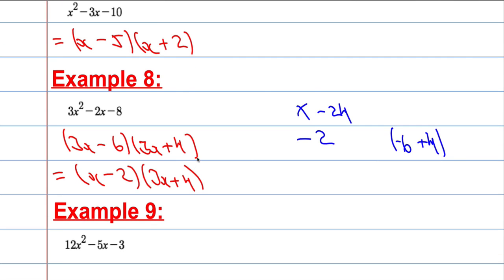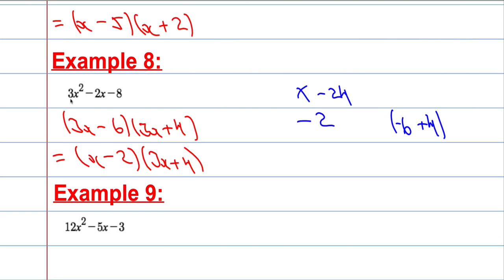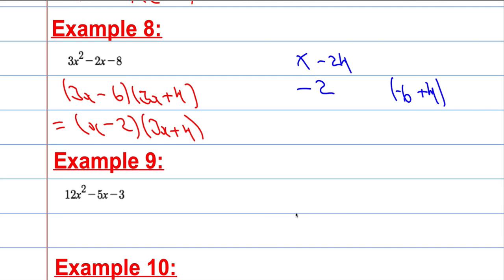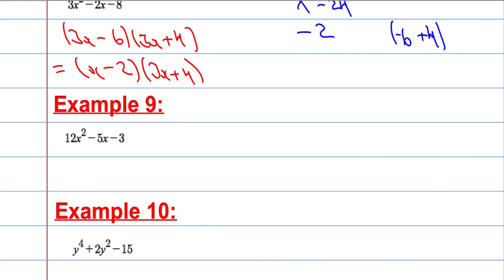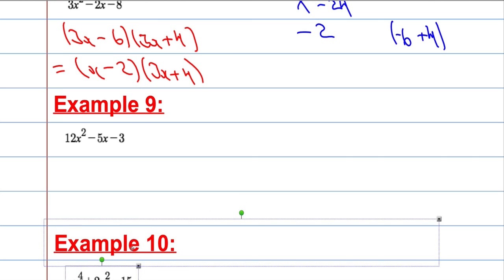Let's have a look at the next one. Again, we do have a tutorial that explains this in much more detail. Now, we're going to use that method again. So take the number in front of x squared and times it by minus 3. So I get minus 36. I need two numbers that multiply to make minus 36 and that add to make minus 5.